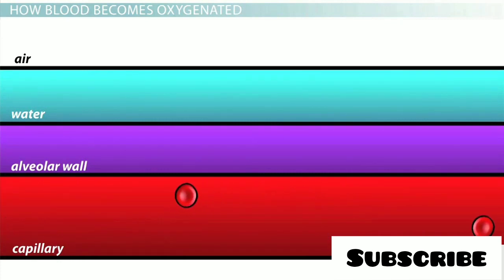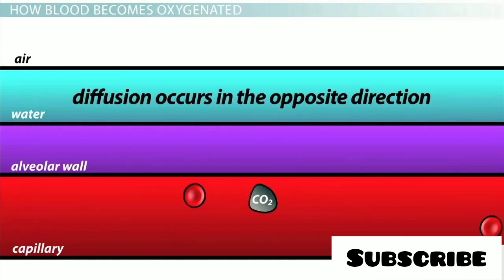As the oxygen is diffusing into the blood, carbon dioxide, which is the primary waste product of animal cells, is being released. Because there is so little carbon dioxide in the air compared to the blood, diffusion of carbon dioxide occurs in the opposite direction to that of oxygen.